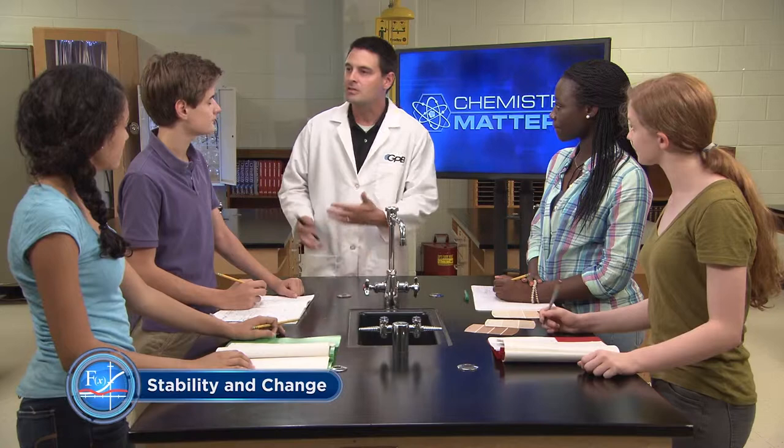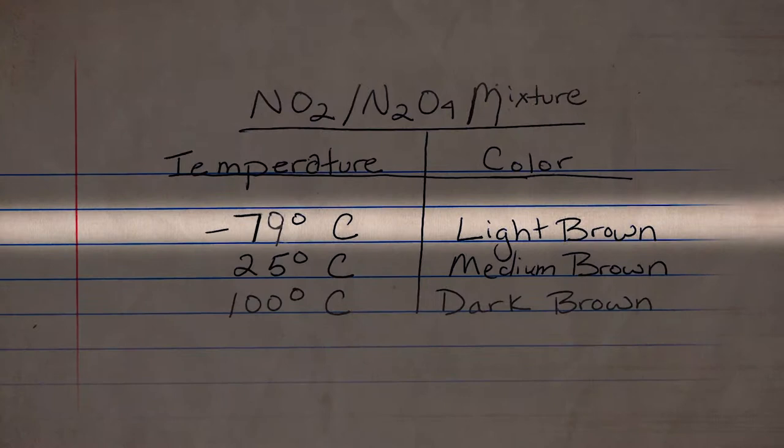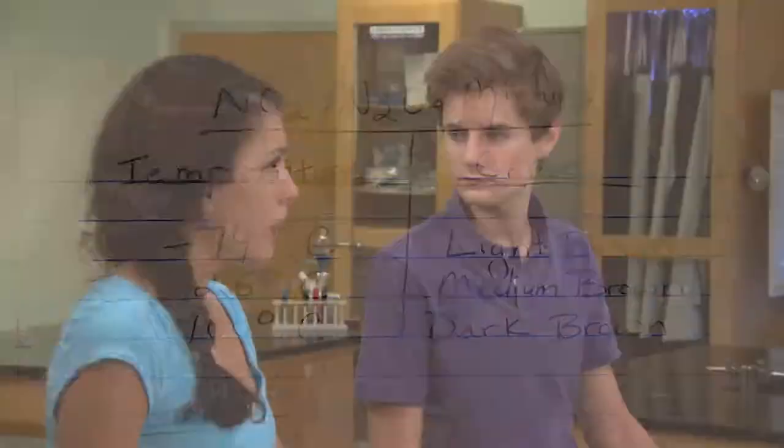Well, we recorded the color of the gases in the tube at negative 79 degrees Celsius, 25 degrees Celsius, and 100 degrees Celsius. And we found that the gas mixture was a darker shade of brown at higher temperatures. But there was always some brown, even in the dry ice. So that means there was more of the brown gas at higher temperatures.